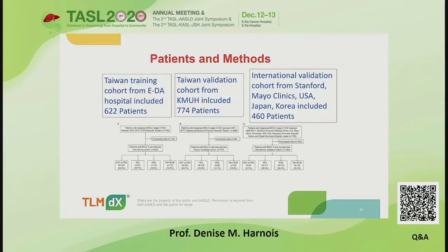Three cohorts were used to assess. First was a Taiwan Training Cohort of 622 patients. There was a Taiwan Validation Cohort of 774 patients. And an International Validation Cohort from Stanford and the Mayo Clinic within the United States, and also included patients from Japan and Korea, for a total of 460 patients.